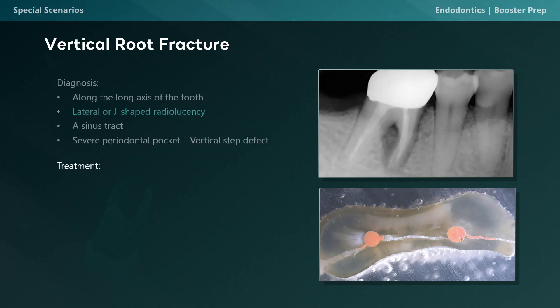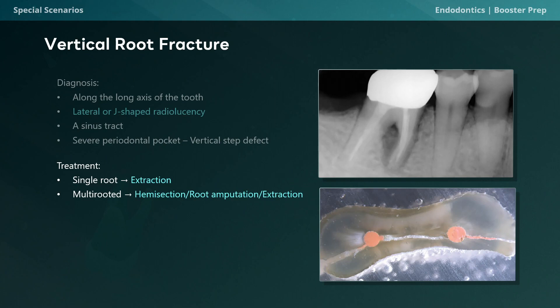So how do we treat VRF? It depends. If we have a single-rooted tooth with VRF, we simply extract it — VRF is a hopeless situation. If we have a multi-rooted tooth, we could perform a hemisection or root amputation to remove the involved root. But these treatments typically involve a specialist, extra cost, and have poor results, so extraction is often the treatment of choice here as well.